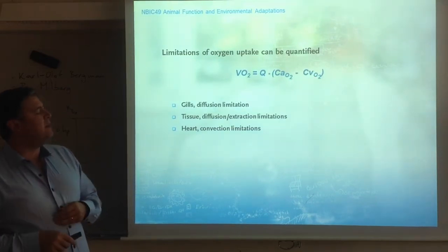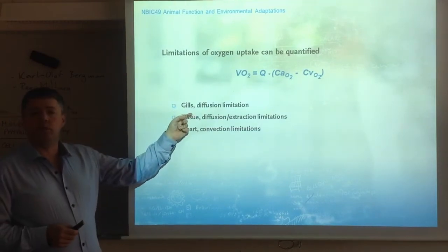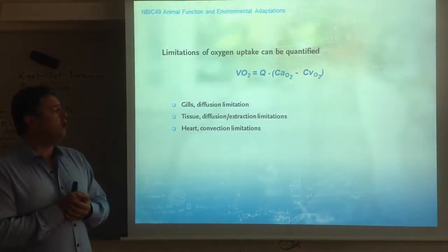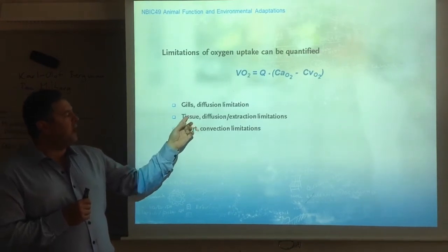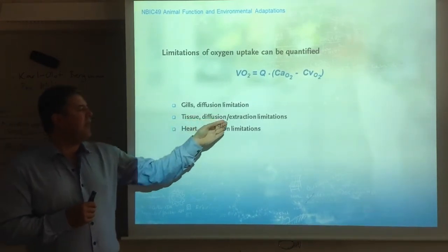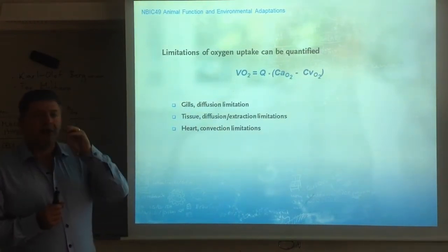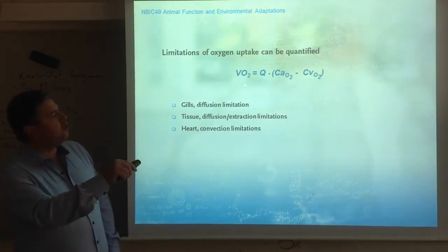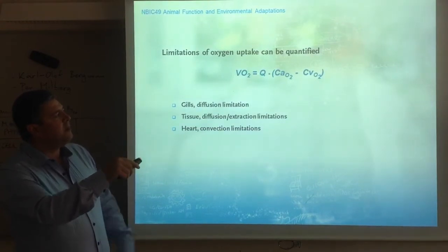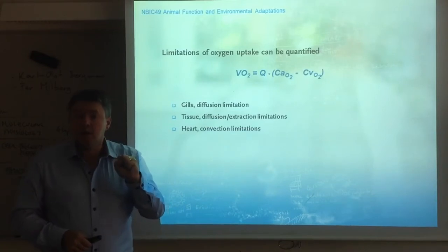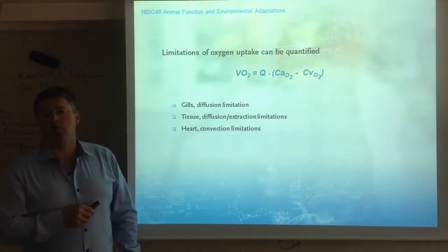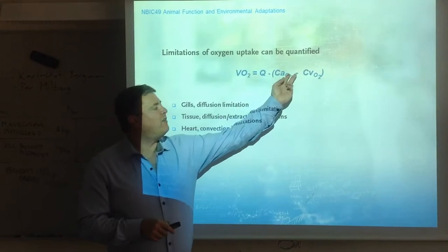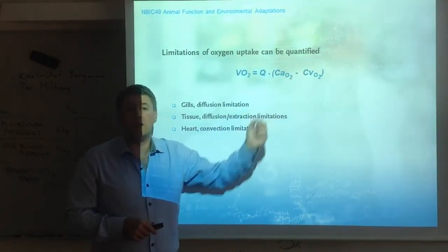If we are talking about fish, you have limitations at the level of the gills. At the level of the gills, there is a diffusion limitation that may prevent the fish from taking up enough oxygen. We also have limitations at the level of extraction from the tissues. And finally, another potential limitation at the level of the heart. The heart is important because it drives cardiac output — if the heart is limiting, we may not be able to support the same oxygen consumption.